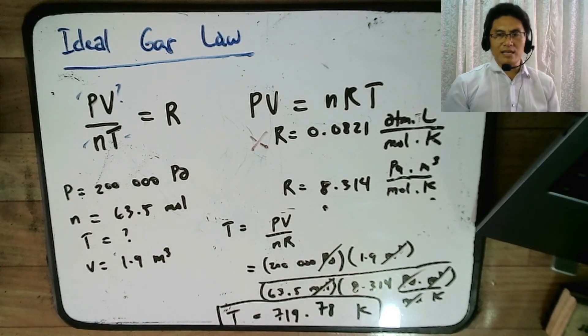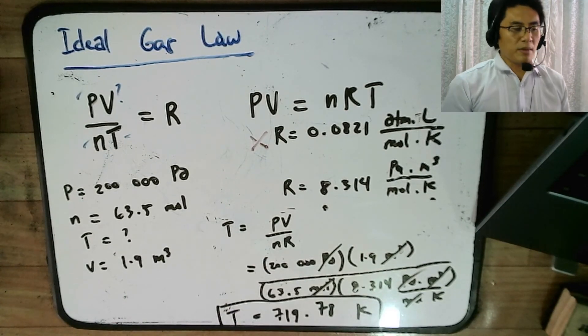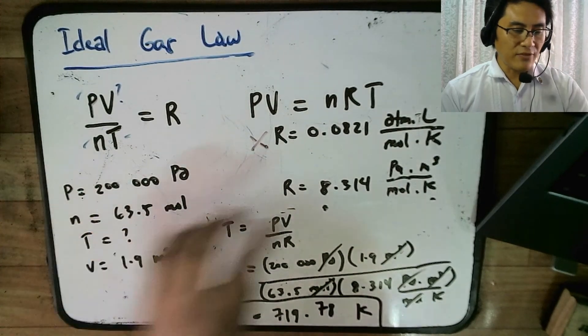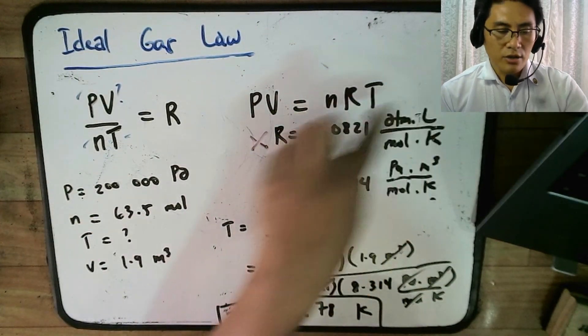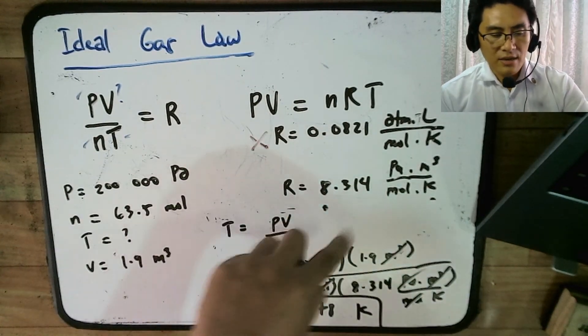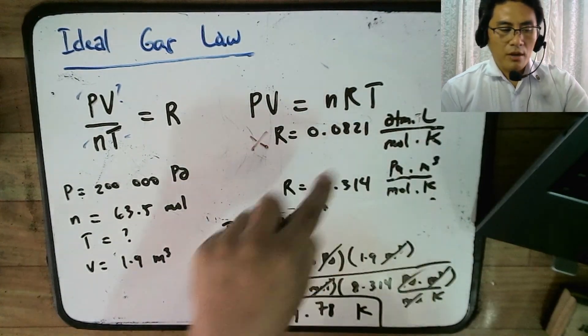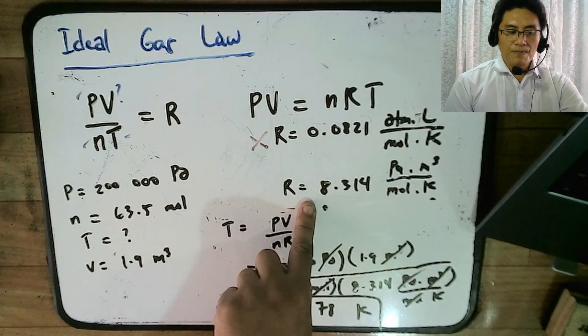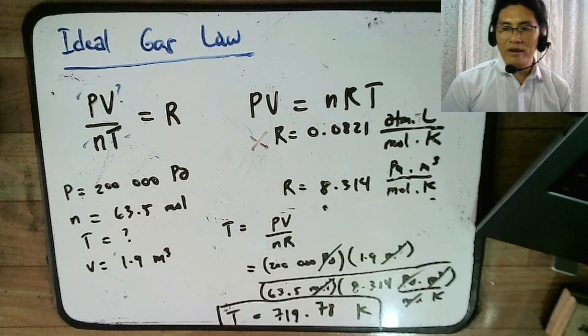So again, the key takeaway here is you have to be mindful of what is given. If what is given is in ATM liter, you use this value, 0.0821. If what is given is in Pascal and meter cube, you use this value, which is 8.314.